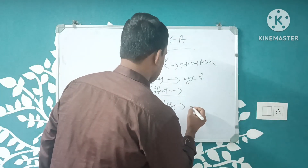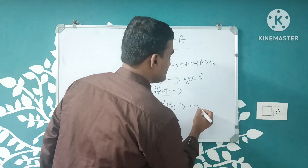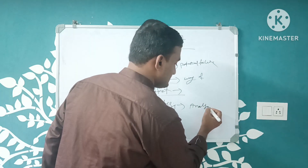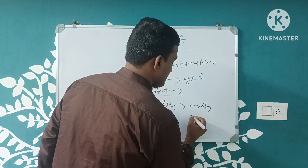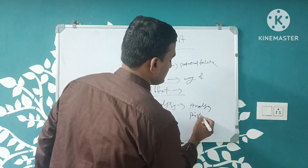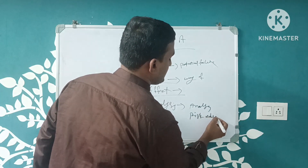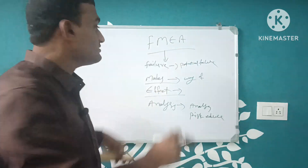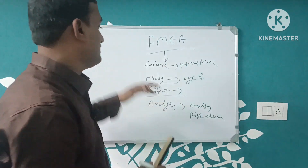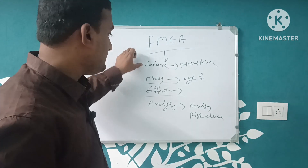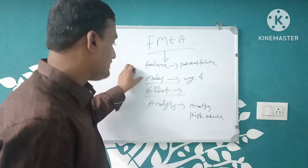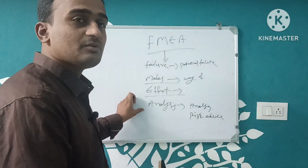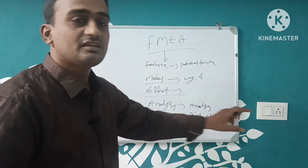Analysis — we analyze and reduce the risk. FMEA is a tool used to find the potential failure, identify what the effect would be if it occurs, and then take steps to reduce the risk.